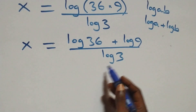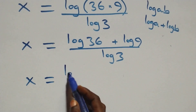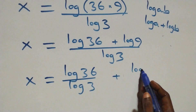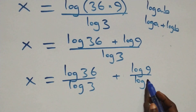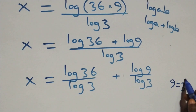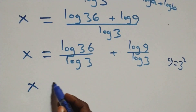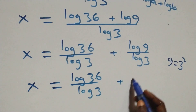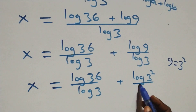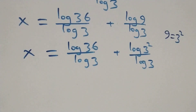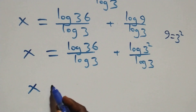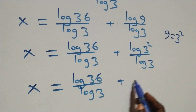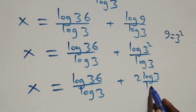The next step, we separate this into two fractions and we have x equals log 36 over log 3 plus log 9 over log 3. Also, 9 is the same as 3 times 3, which is 3 squared. This gives us log 3 squared over log 3.